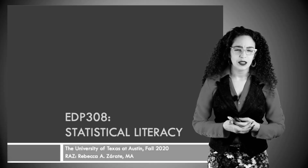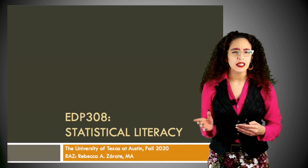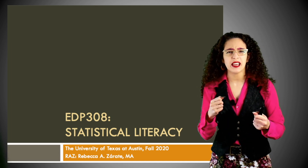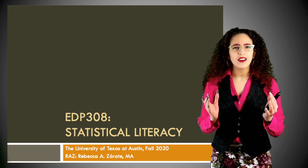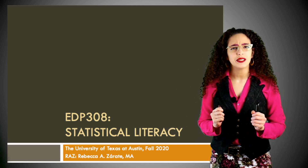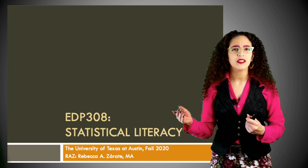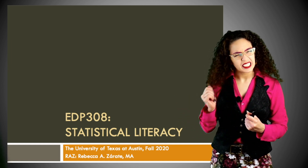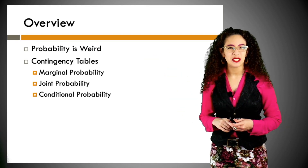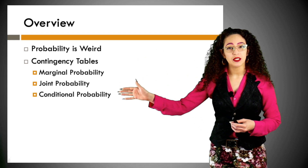Welcome back everybody. We have gone through an amazing journey looking at many different statistical techniques for quantitative interval ratio data. Now for our final lesson, we are going to switch gears and look at what you can do with nominal categorical data. In this short lesson we are going to discuss how probability is weird, and we are going to look at contingency tables — marginal, joint, and conditional probabilities.